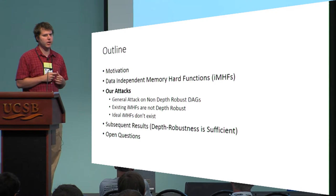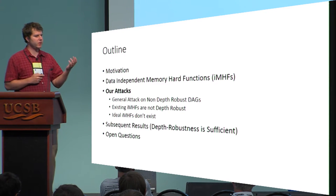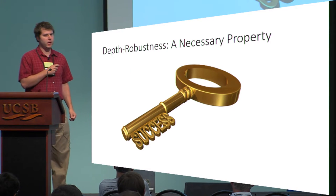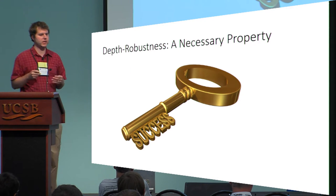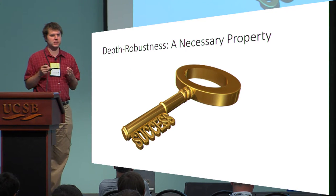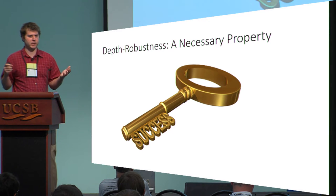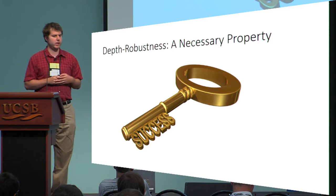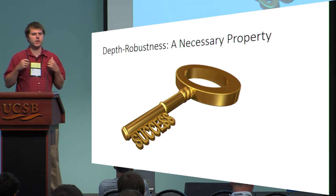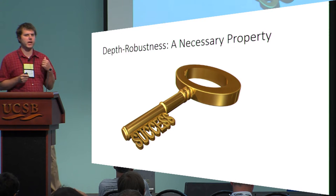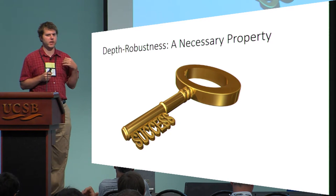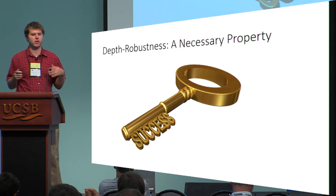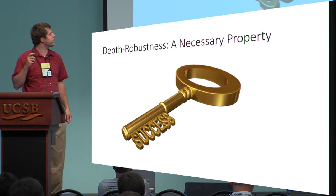We'll say that an iMHF is C-ideal if attack quality is smaller than C and the cost of the naive algorithm is sufficiently large for some small constant τ. The key takeaway from our attacks is that depth robustness is a necessary condition for an iMHF to satisfy. In particular, we give an attack on any graph that doesn't satisfy the combinatorial property called depth robustness, which I'll define next.